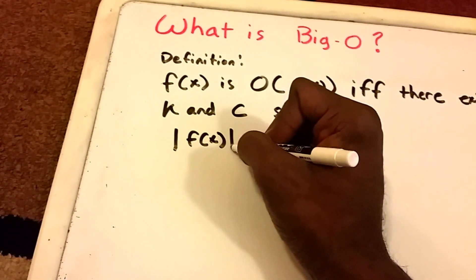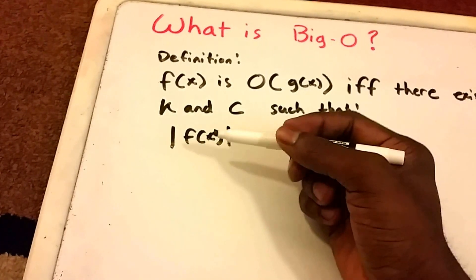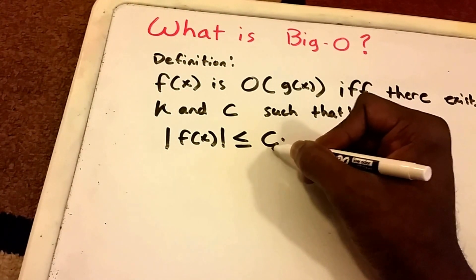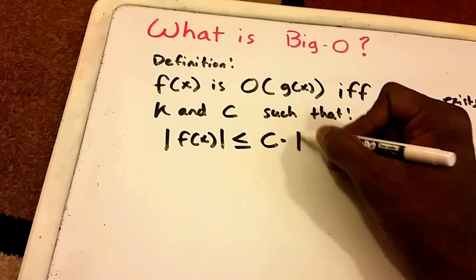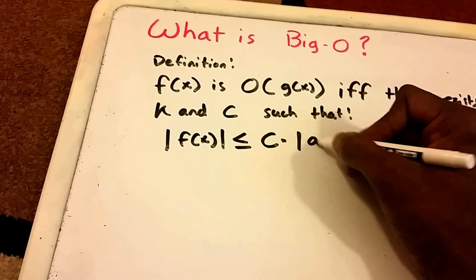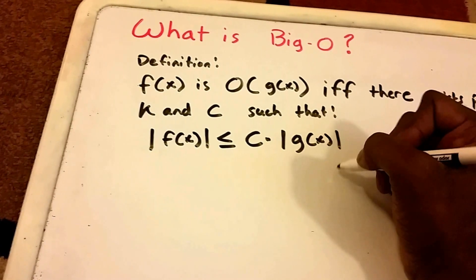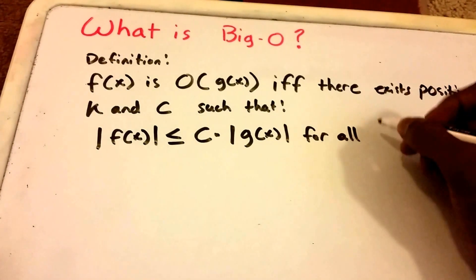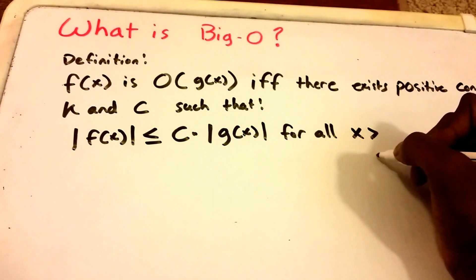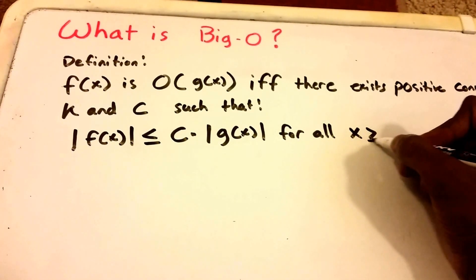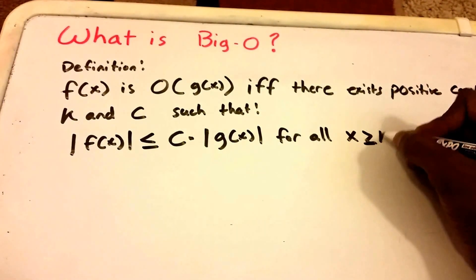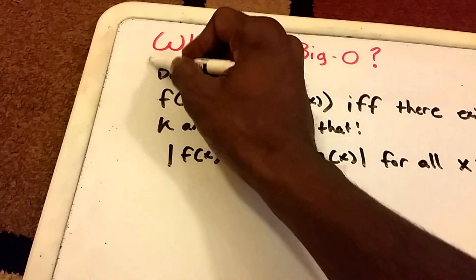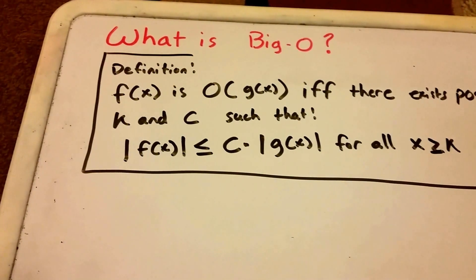The absolute value of f of X is less than or equal to some constant C, some positive constant, times the absolute value of G of X for all values of X that are greater than or equal to some K, some positive constant K. So this is the actual definition of Big-O.